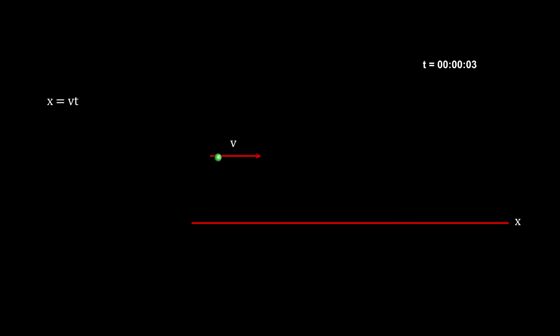For example, suppose we had a particle moving from left to right at a specific speed. From Newton's equations, the distance is equal to the speed times the time. After 24 seconds, we would say that the particle is here.